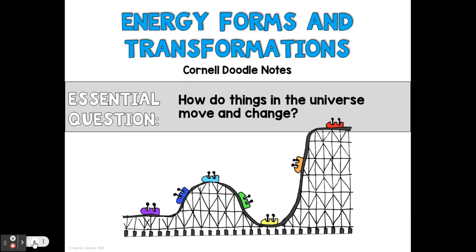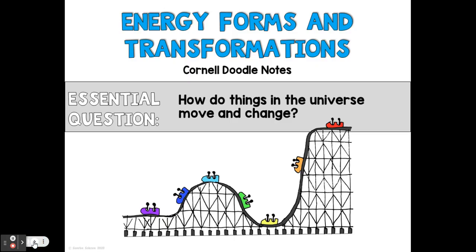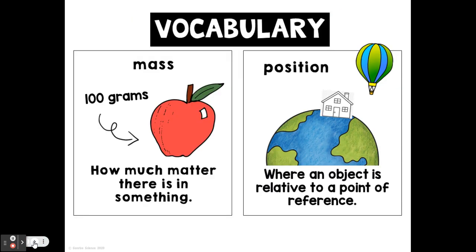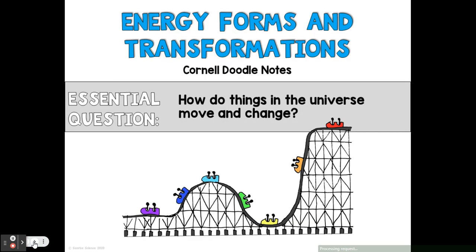Now you are going to get the information from this slideshow. It says energy forms and transformations. This is combining Cornell notes and doodle notes. You're not going to have to draw anything, but you will go back in and color them after you write down all the information. So we wrote the essential question: how do things in the universe move and change?